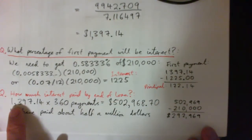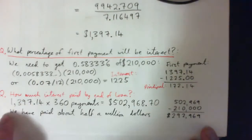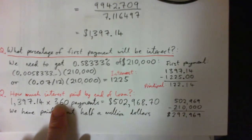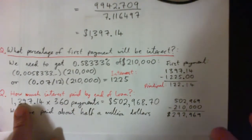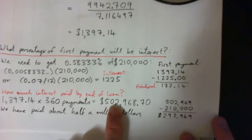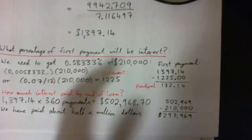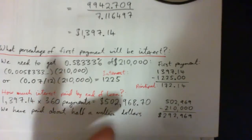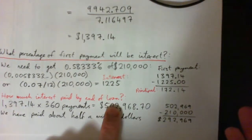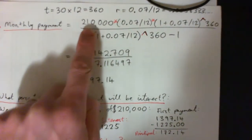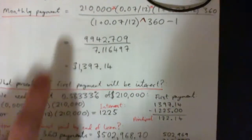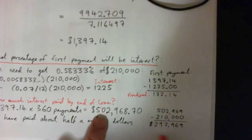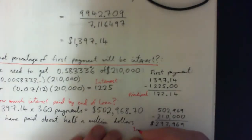The next question is how much total interest will you have paid by the end of the loan. We take our monthly payment of about $1,397 and multiply it by 360, because that's the total number of payments over 30 years. That works out to about $502,968.70 — roughly half a million dollars. We loaned $210,000, so we subtract that from the half million, and the result — about $292,969 — is the total amount of interest paid over the course of the loan.